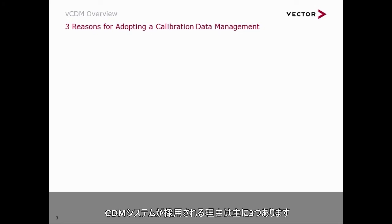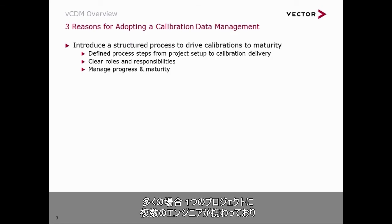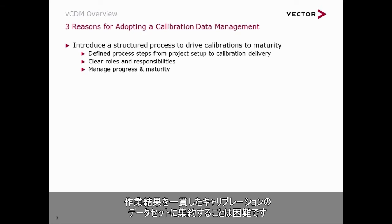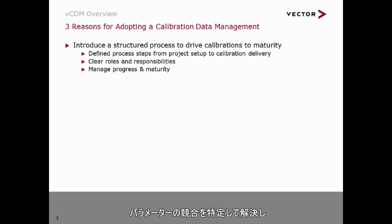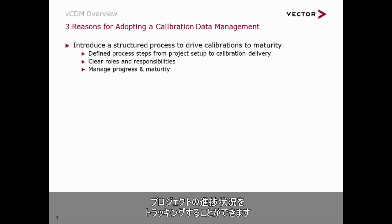There are three major reasons to adopt a CDM system. Many calibration projects have multiple engineers working on the same project with different functions. Merging their work results for a consistent calibration data set is challenging. A CDM system helps you to implement a structured process with clear roles and responsibilities, assists you by identifying and resolving parameter conflicts, and provides progress and maturity tracking for the project.